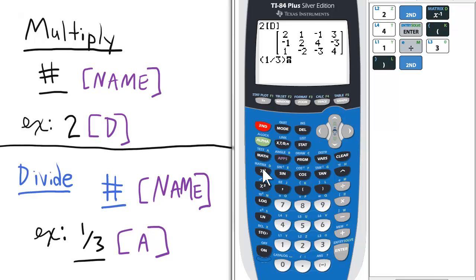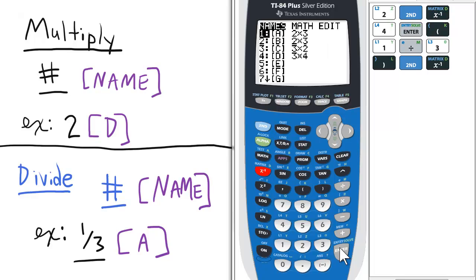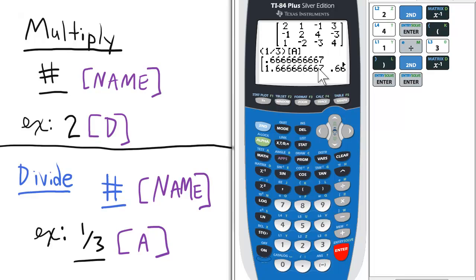So in this case we'll select matrix A. And these are all the elements of A divided by 3.